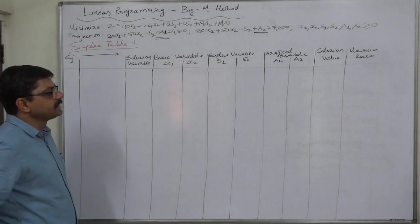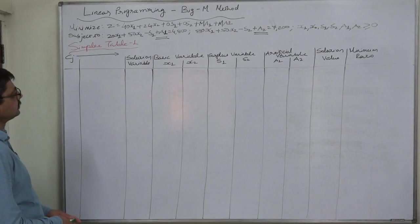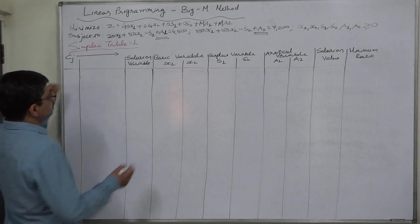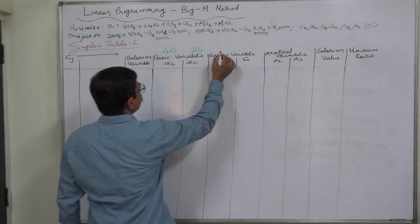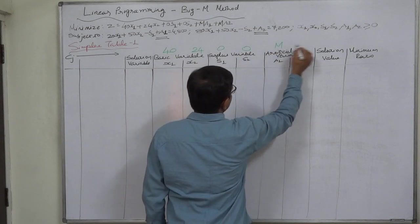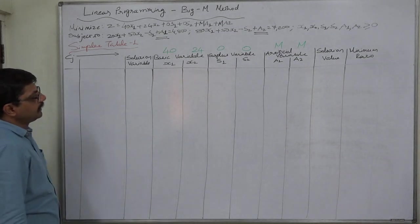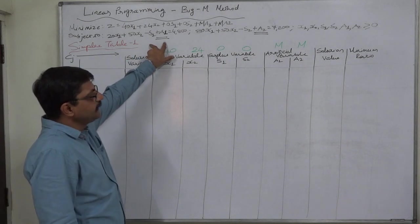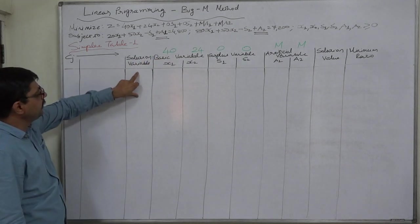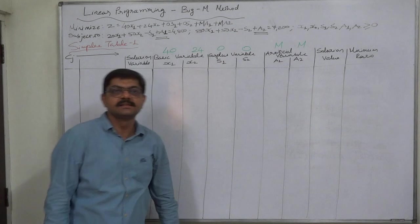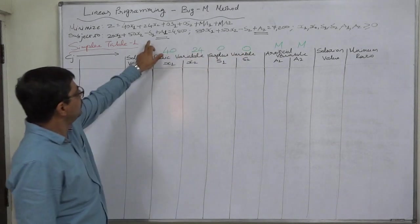In all inequalities having a greater than or equal to sign, let us start with the initial solution — the first simplex table. We write c0: the coefficients are 40 for x1, 24 for x2, 0 for s1, 0 for s2, and positive M for a1 and a2. For greater than or equal to type inequalities there is no slack variable, so in the initial solution we take the artificial variables as solution variables. We cannot take surplus variables as solution variables because they are always negative.